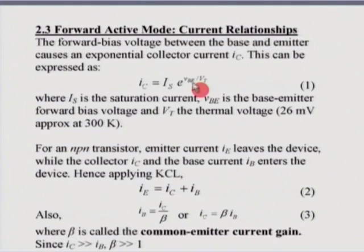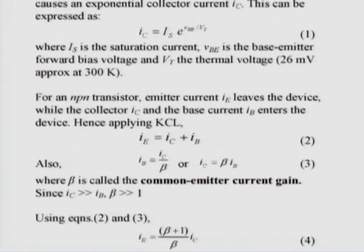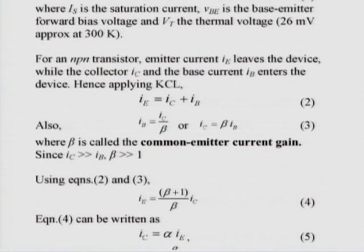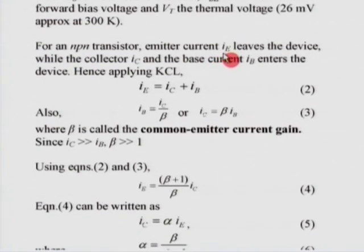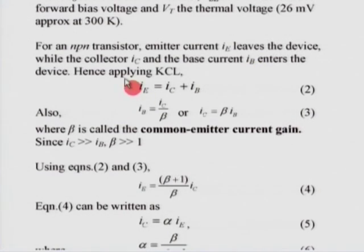For an NPN transistor, the emitter current leaves the device whereas the collector current and the base current both enter the device. Therefore, applying Kirchhoff's current law, we can write that the emitter current I_E equals collector current plus base current. This is one of the fundamental current equations and it is always valid irrespective of which mode of operation the BJT is in.